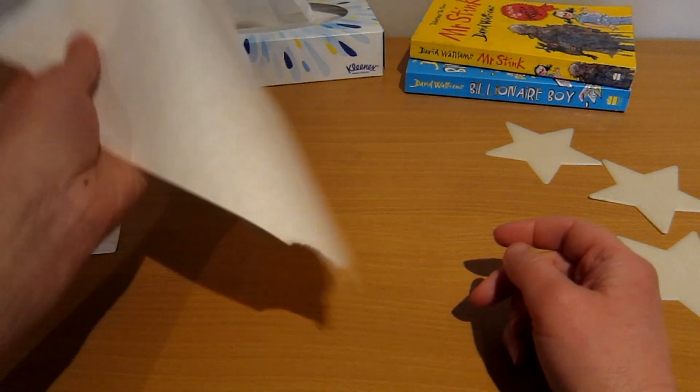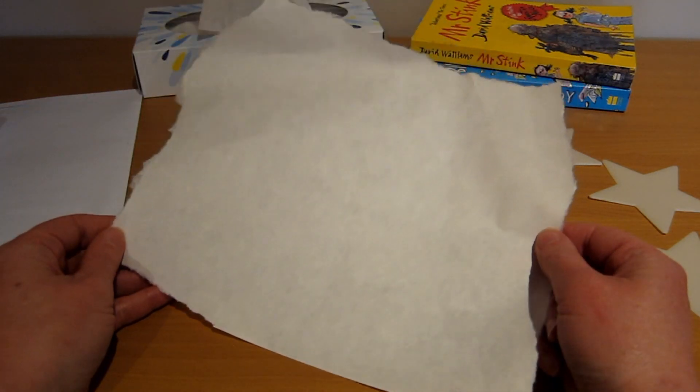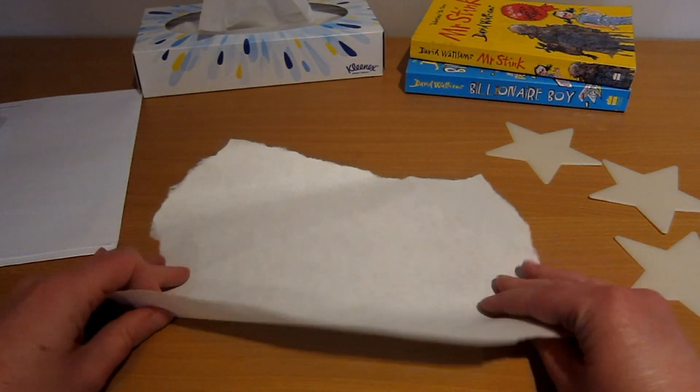If you don't have an envelope and you just have a scrap bit of paper, don't worry it's really easy to make a right angle.